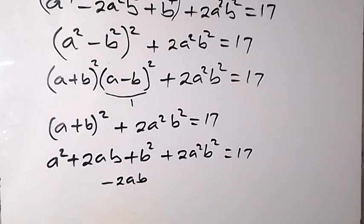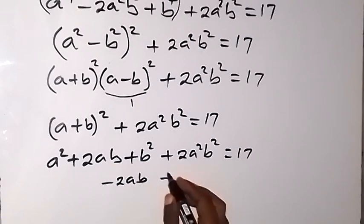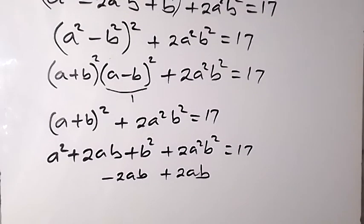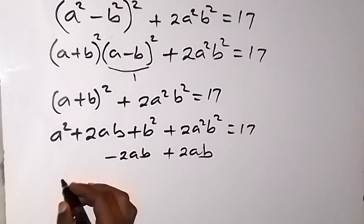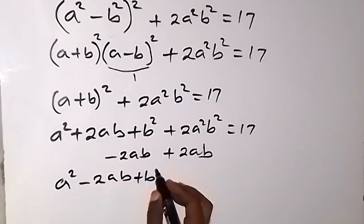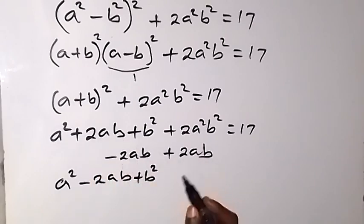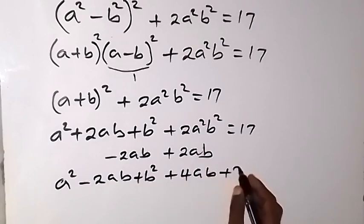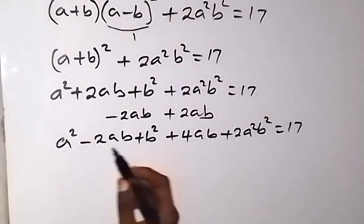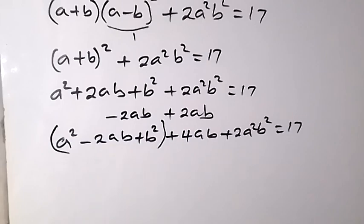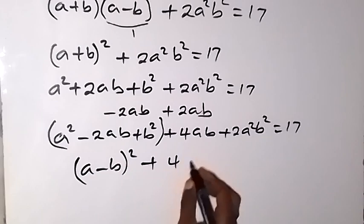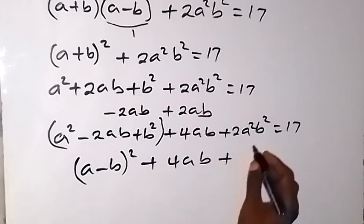We subtract 2ab and also add 2ab on the left side — so nothing changes. Rearranging, we get (a² - 2ab + b²) + 2ab + 2ab + 2a²b² = 17, which simplifies to (a-b)² + 4ab + 2(ab)² = 17.